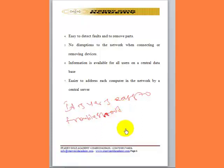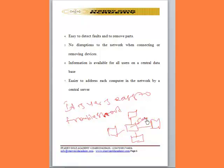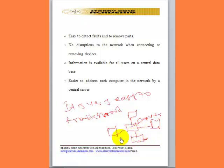For example, if we have a network with a central server and one computer is experiencing a problem but others are not, it is very clear that the specific computer is the one having the problem, not the entire network. The user can simply abandon that system and use another free system, making troubleshooting straightforward in a star topology.